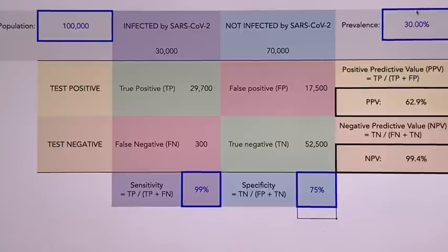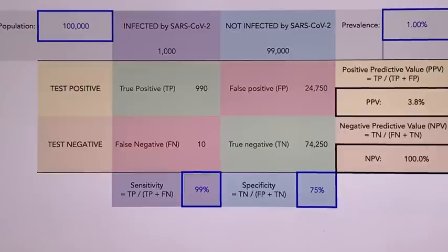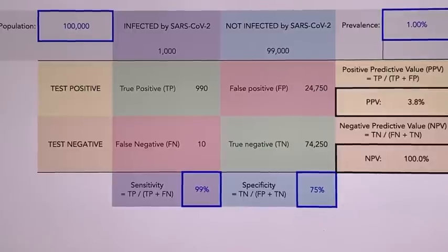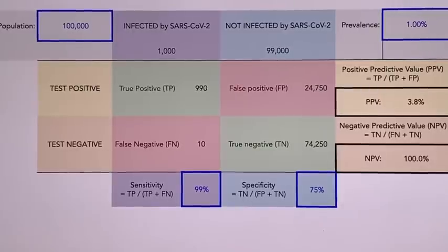Let's see how that changes in a low prevalence situation. In a low prevalence situation, a low specificity test with high sensitivity is about as useful as a warm bucket of hamster vomit — it serves no purpose and should be interpreted with great caution.